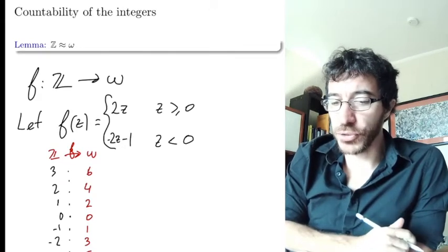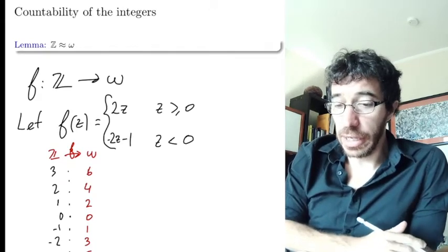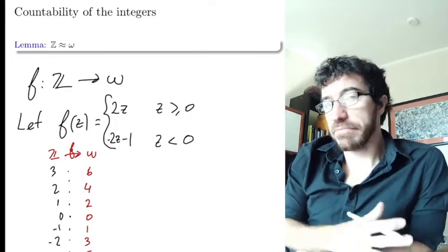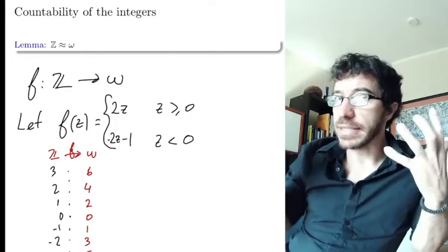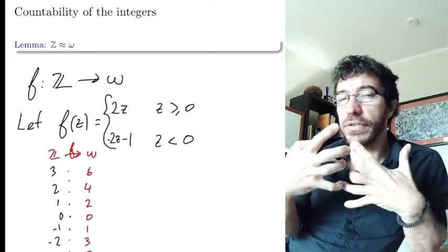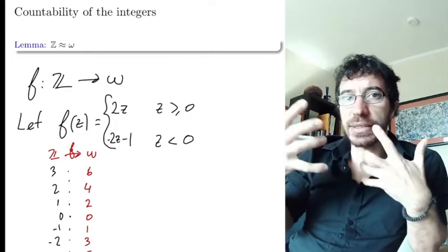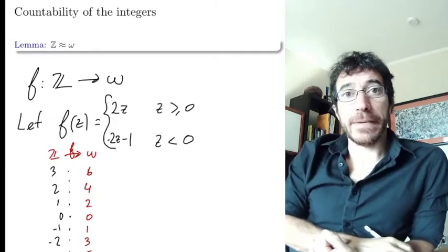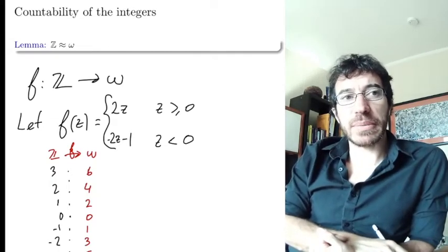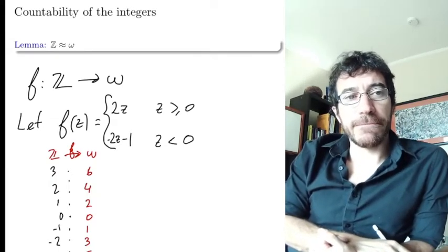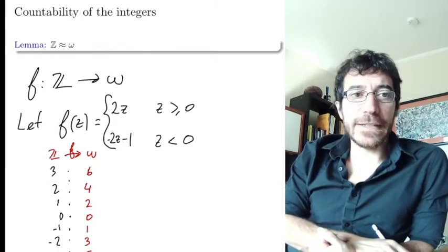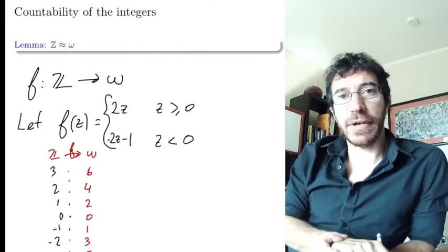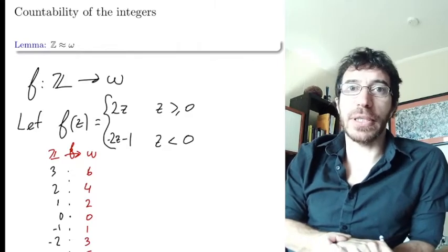So that means these two sets, despite one being essentially a proper subset (really a proper embedding) of the other, are still the same size. You can still find a bijection between them.